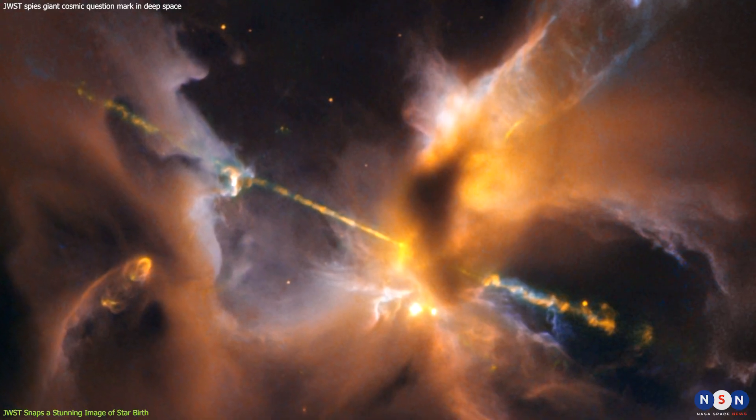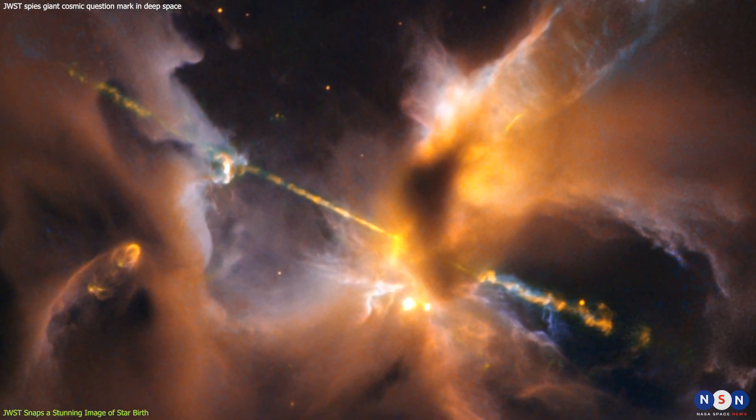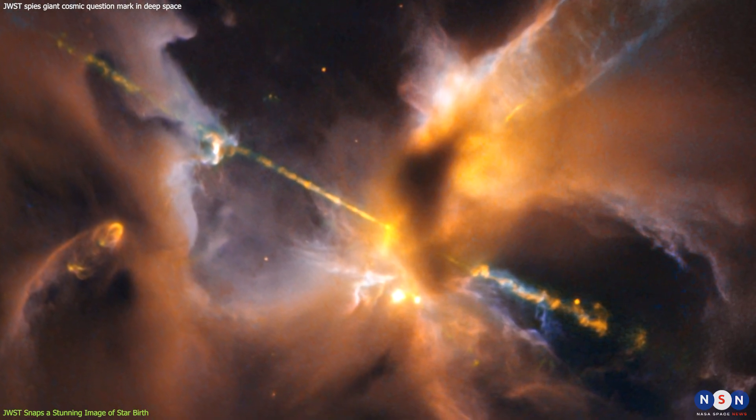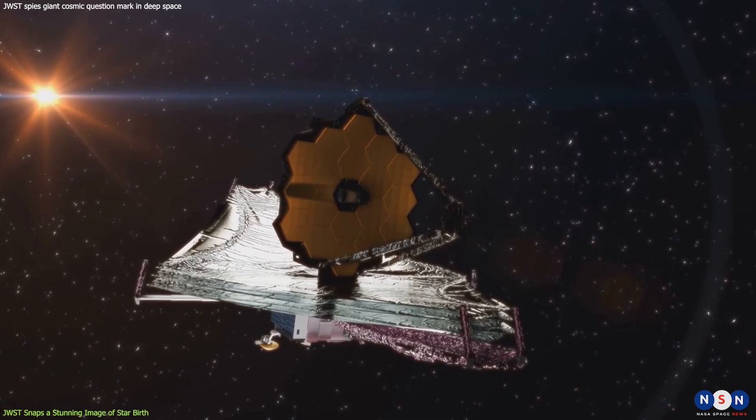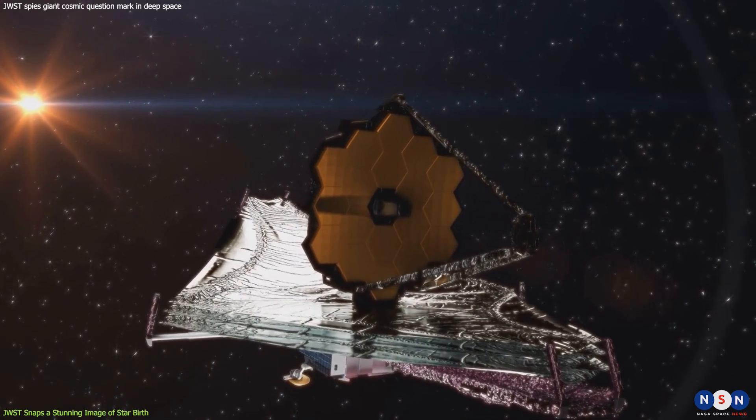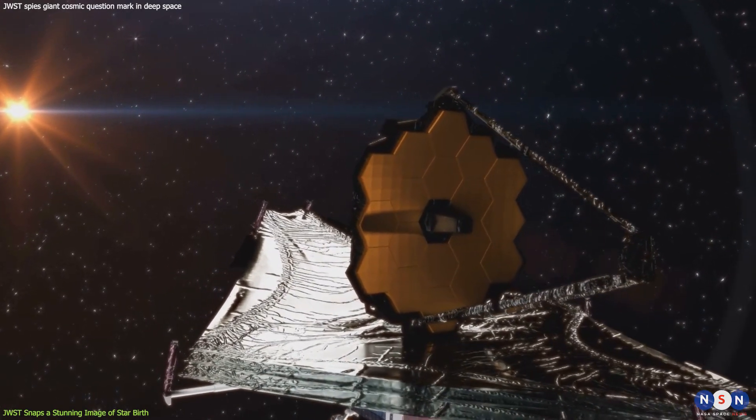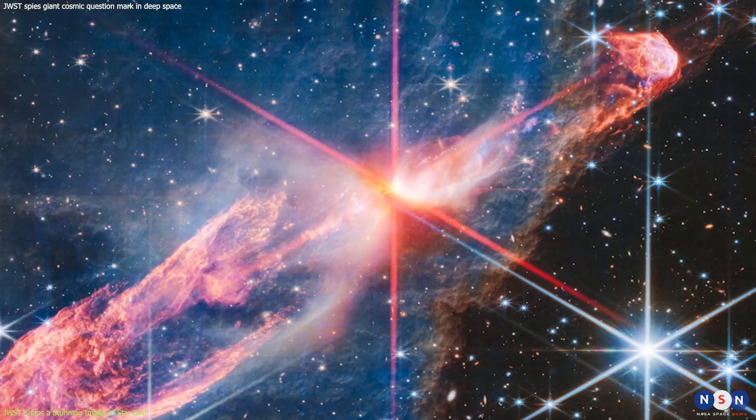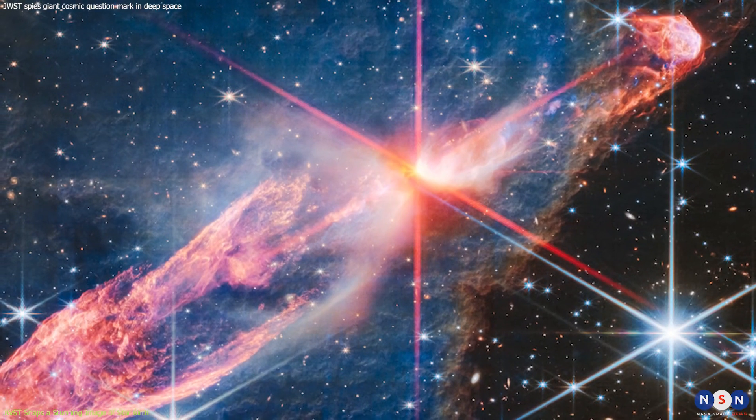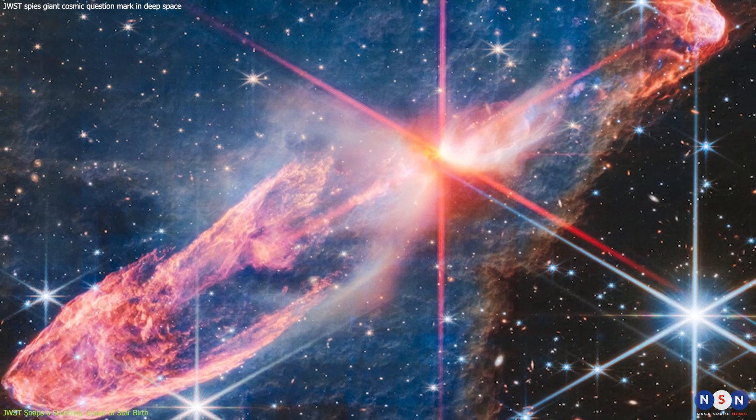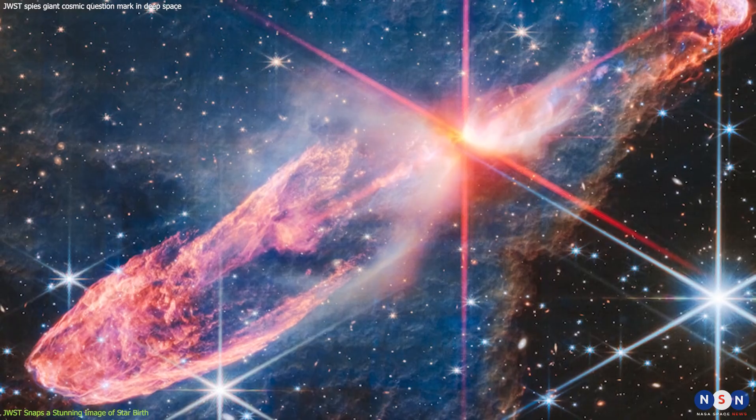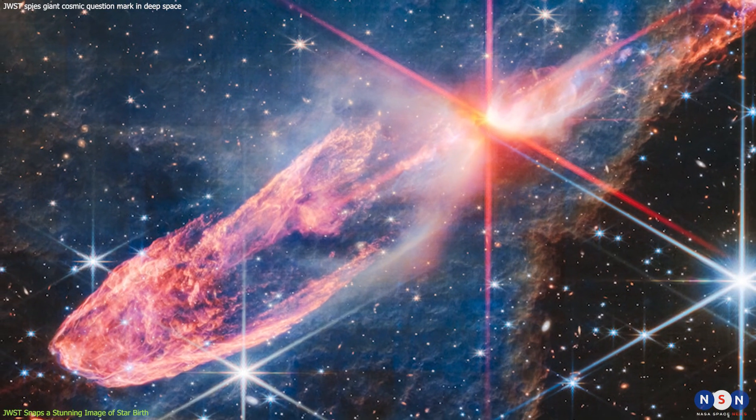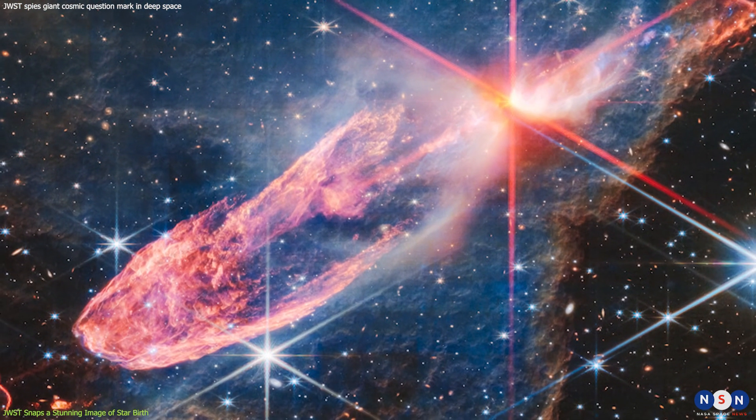Herbig-Haro objects are very common in star-forming regions, but they are usually hidden by dust and gas from visible light telescopes. James Webb, however, can peer through the dust and see them in unprecedented detail. The image that Webb captured shows two Herbig-Haro objects, named HH46 and HH47, located about 1,500 light-years away in the constellation Vela.